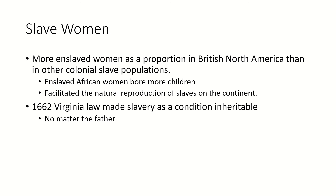Then in 1662, there's a Virginia law that stated that an enslaved woman's children inherited the condition of their mother. So if you're ever asked how they decided who's a slave and who's not, it was through the lineage of the mother. It was really an economic strategy that basically said if you're born a slave, you stay a slave — a way to keep women as slaves for life and then their children as slaves for life also, no matter who the father was.